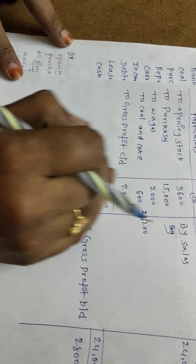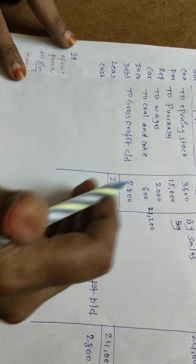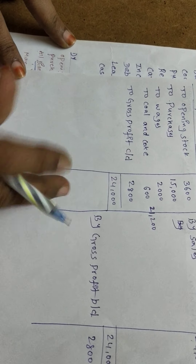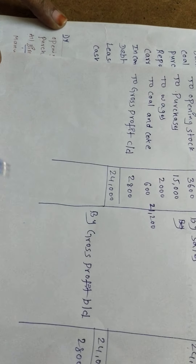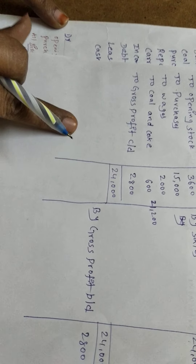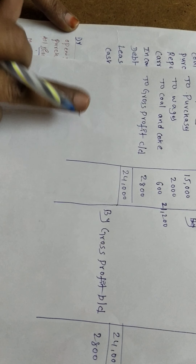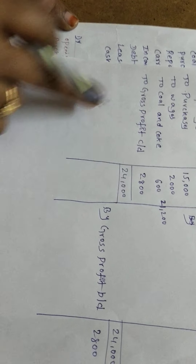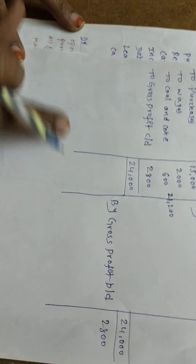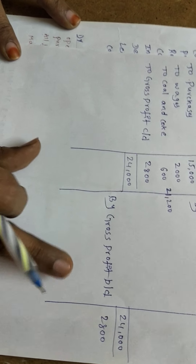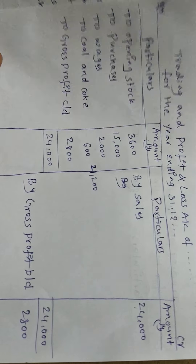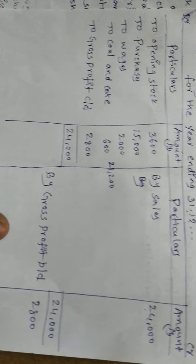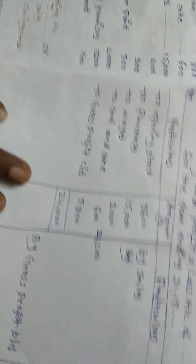Trading account is over. Now we prepare the profit and loss account. We prepare the trading and profit and loss account together. On the debit side we record all indirect expenses; on the credit side we record all indirect incomes.